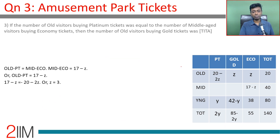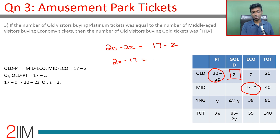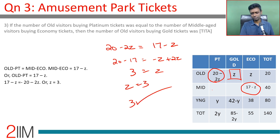The number of old visitors buying platinum equaled the number of middle-aged visitors buying economy. Old platinum = 20 minus 2z; middle-aged economy = 17 minus z. Setting these equal: 20 minus 2z = 17 minus z, so 3 = z. Therefore z = 3, and the number of old visitors buying gold tickets is 3. That's a fairly simple question once you have the right variables filled in.